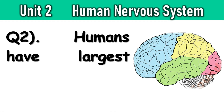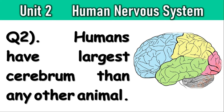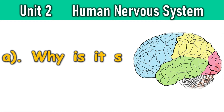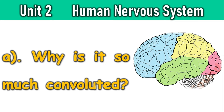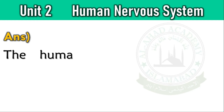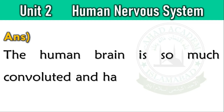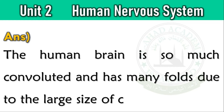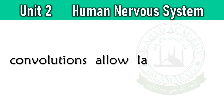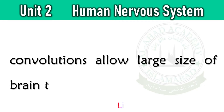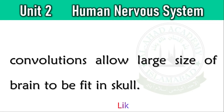Humans have the largest cerebrum of any other animal. Why is it so much convoluted? The human brain is so much convoluted and has manifolds due to the large size of the cerebrum. These convolutions allow the large size of the brain to fit inside the skull.